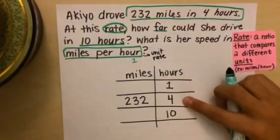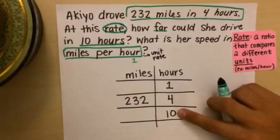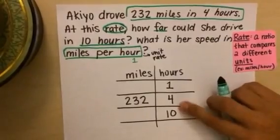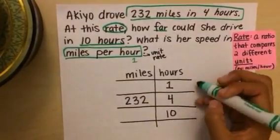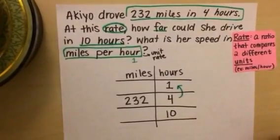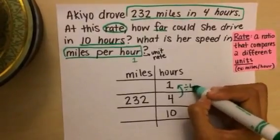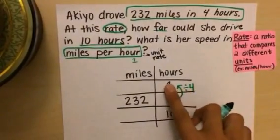So when I look at four and 10, well, I think to myself, does four go into 10 an even number of times? No, it doesn't, right? Four times two is eight, four times three is 12. So these numbers are not compatible. But I can think that, well, hmm, how could I go from four to one? I can divide by four. Four divided by four gives me one.